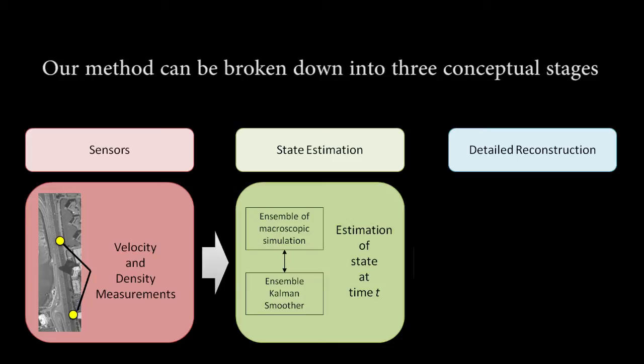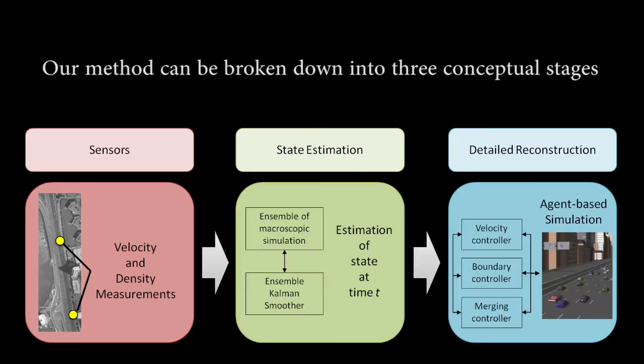These state estimates are then used to drive an agent-based microscopic traffic simulation. These state estimates are used to control such things as boundary conditions, individual car velocities, and whether a car can merge or not.